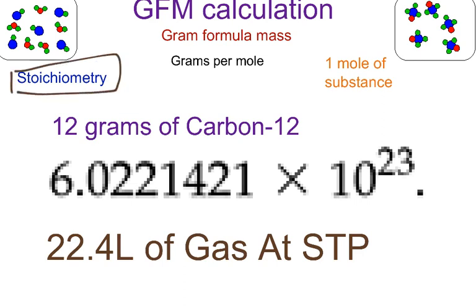We're on the topic of stoichiometry, and GFM simply stands for gram formula mass, or the mass of the formula in grams. As we discussed before, the unit of gram formula mass is grams per mole. Now, the mole is pretty important in the topic of stoichiometry and has a bunch of different equivalent values.